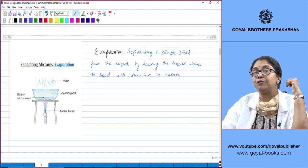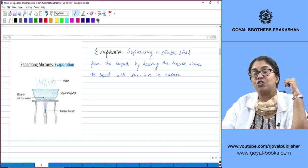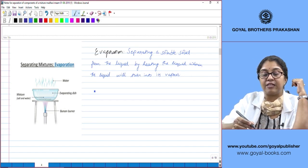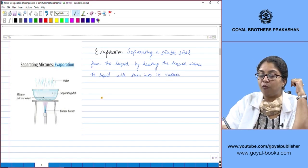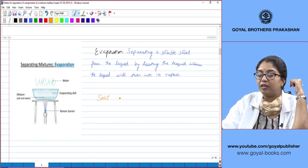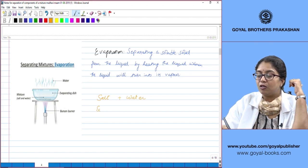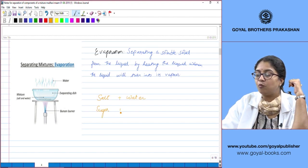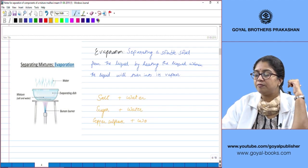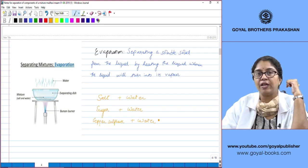Now, examples of mixtures which can be separated by this technique would be salt and water, sugar and water, and copper sulphate and water.